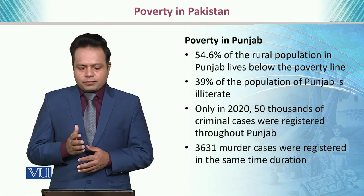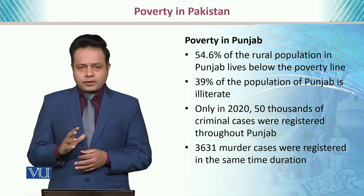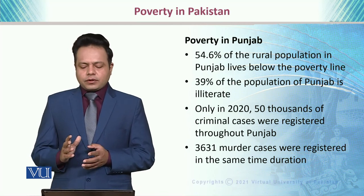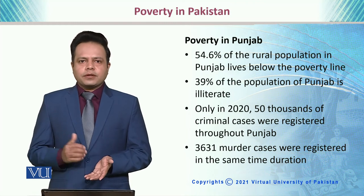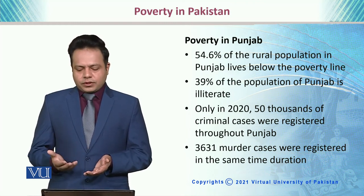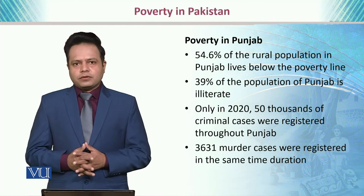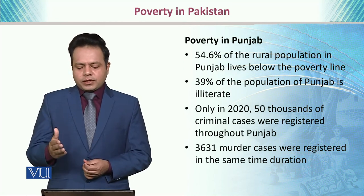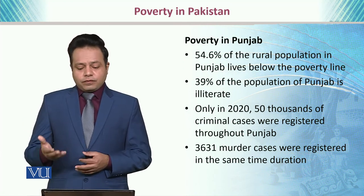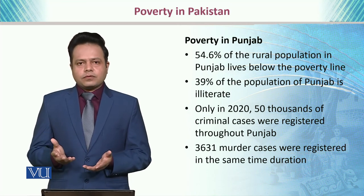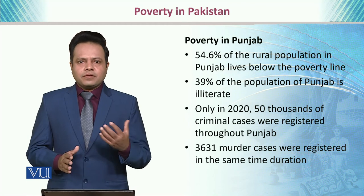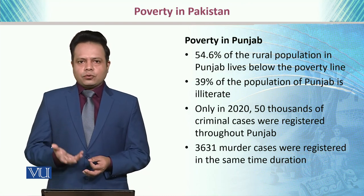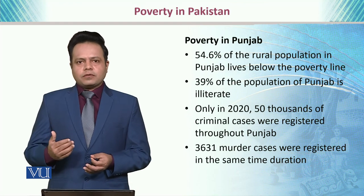In Punjab, 54.6% of the rural population lives below the poverty line, and 39% of Punjab's population is illiterate. In 2020 alone, 50,000 criminal cases were registered throughout Punjab. There is a clear connection between poverty and the increase in crime rates, out of which 3,631 murder cases were also registered. This is significantly impacting the whole of life, forcing people to take the lives of others merely as a means of subsistence.